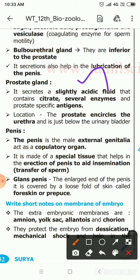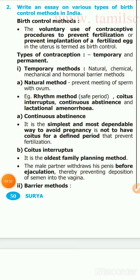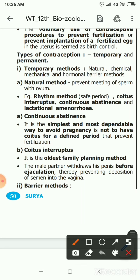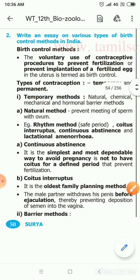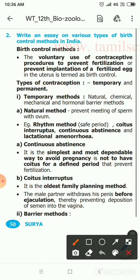The next question covers any two or three methods of natural birth control. The definition of birth control is: the voluntary use of contraceptive procedures to prevent fertilization or prevent the implantation of the fertilized egg. This definition carries one to one and a half marks. Next are the types of contraception.